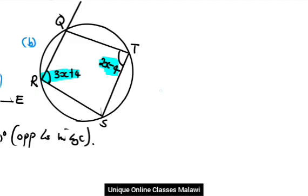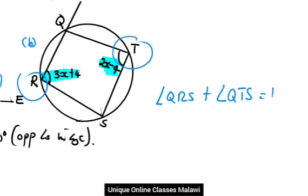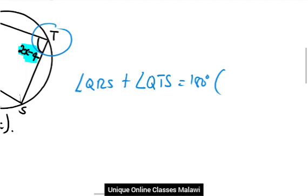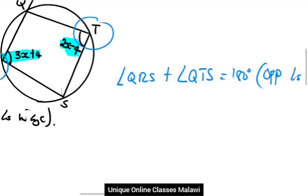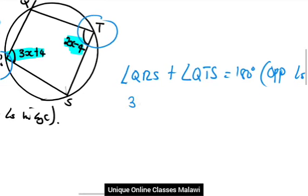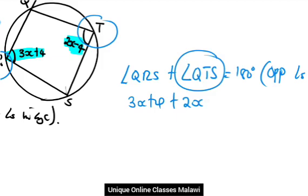We can also apply the theorem which says that opposite angles in a cyclic quadrilateral add up to 180. So angle QRS referring to this one plus angle QTS. Here we have 3x plus 4 and here 2x minus 4 is equal to 180 degrees. The reason behind that is opposite angles in a cyclic quadrilateral.